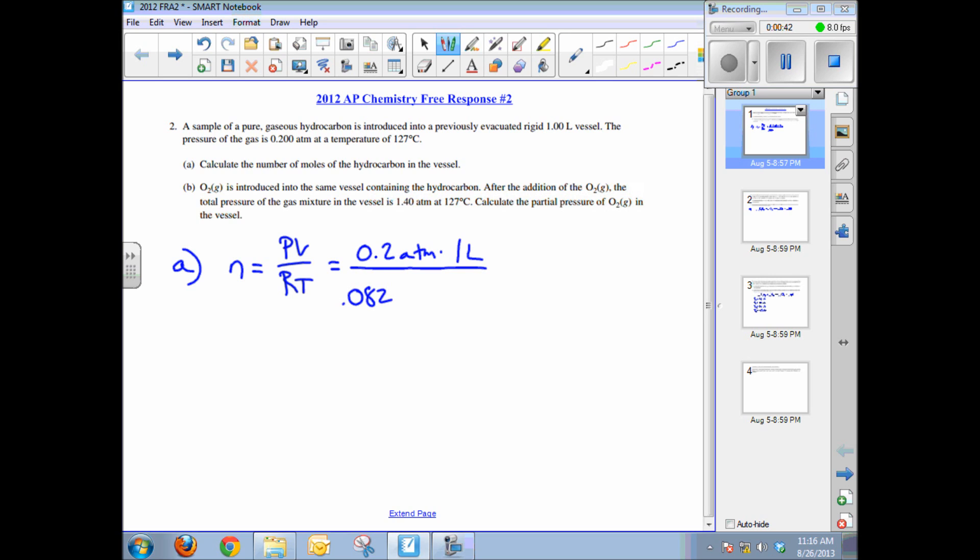which is 0.0821 liter atmospheres per Kelvin mole, and then times your temperature. Of course you must convert Celsius to Kelvin, so it's 400 degrees Kelvin. The answer is 6.09 times 10 to the negative three moles.